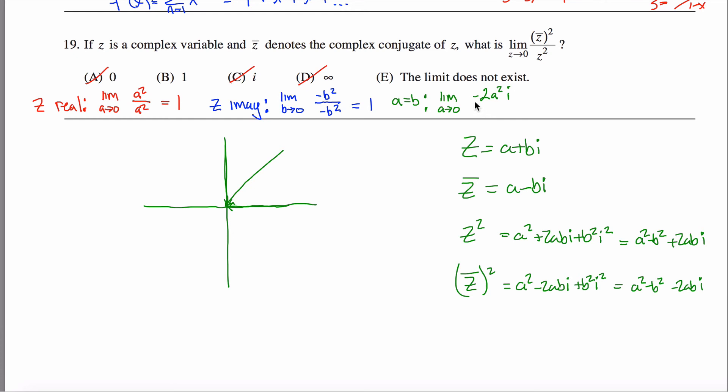And then the denominator, I'd have this thing here, except everywhere I say a b, I'll change it into an a. So a squared minus a squared plus 2 times a times a times i. So I get positive 2 a squared i.